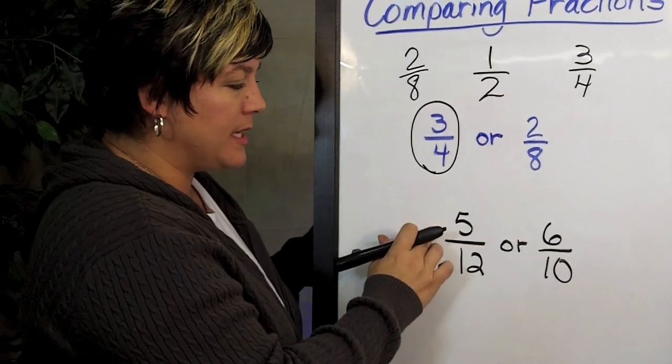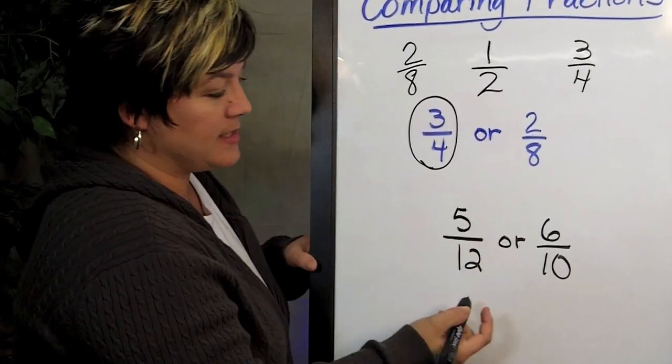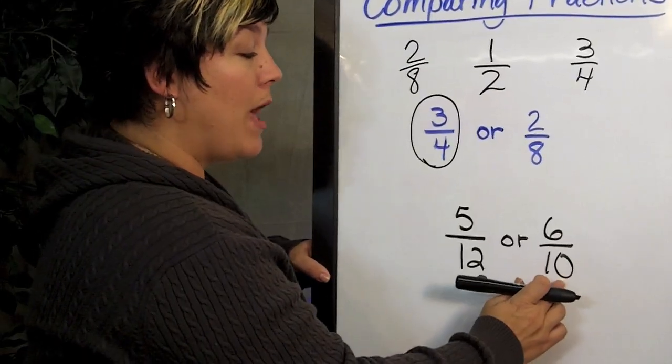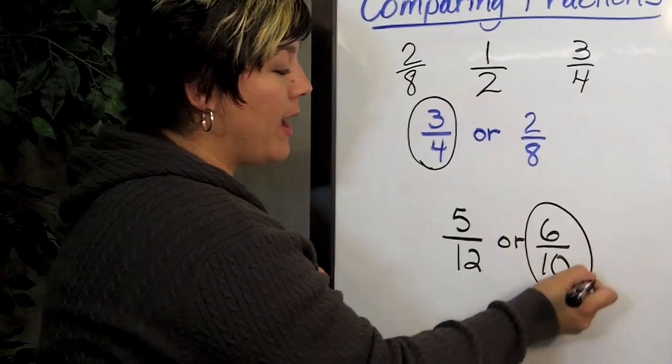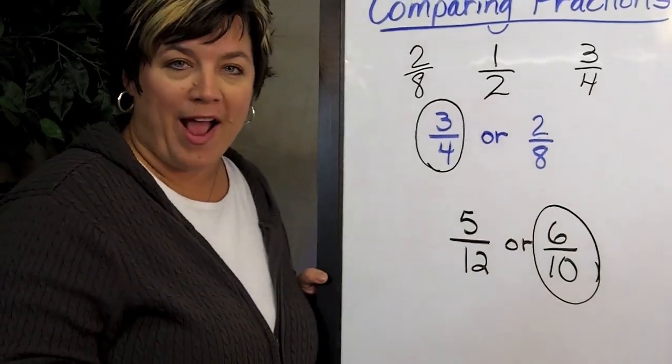Is 5 greater or less than 6? It is less than 6. And we take a look at this one and we say, well, half of 10 is 5 and 6 is greater than 5. So we know right away that this is the greater fraction.